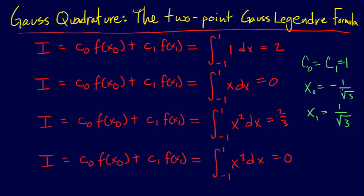All right, so we have a value of c₀ and c₁, and x₀ and x₁, such that when we integrate any of these functions using the trapezoid rule, we get the exact value.